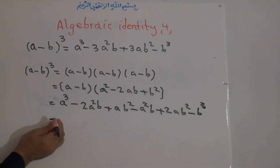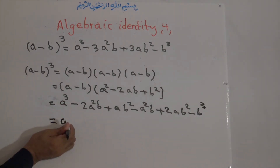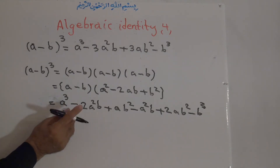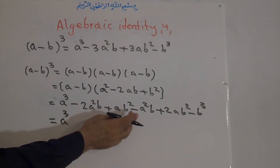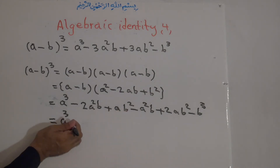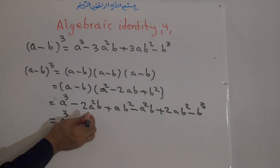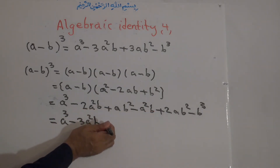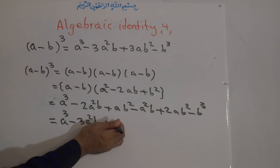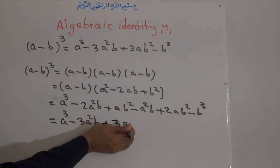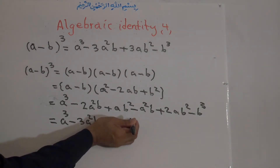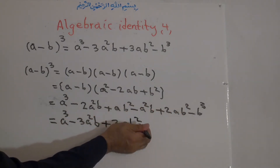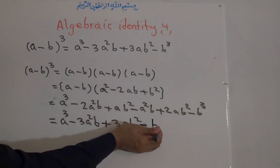Now we simplify. We have a cubed, then minus 2a squared b minus a squared b, which we add together to get minus 3a squared b. Then positive ab squared and positive 2ab squared gives 1 plus 2, which is 3ab squared.